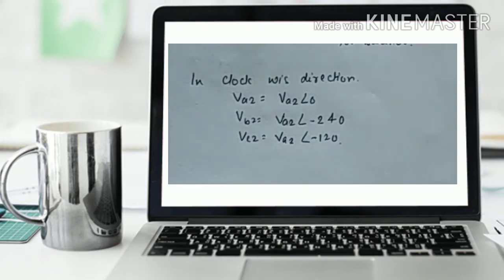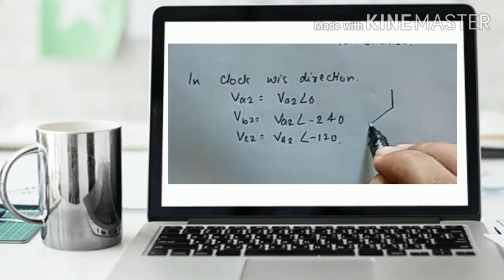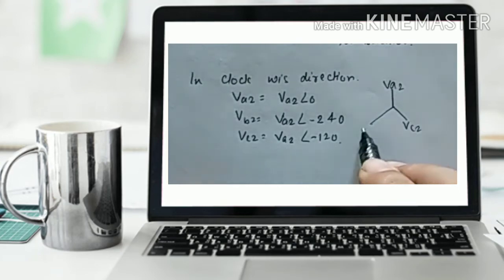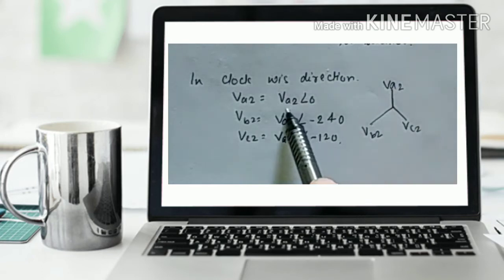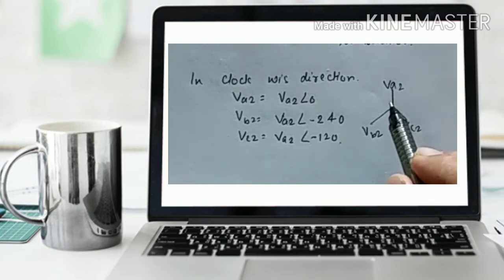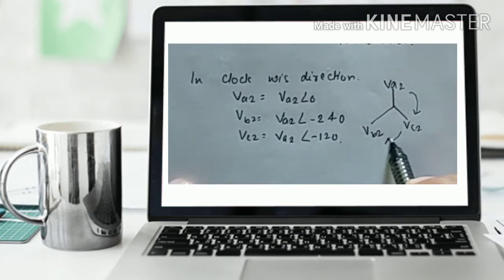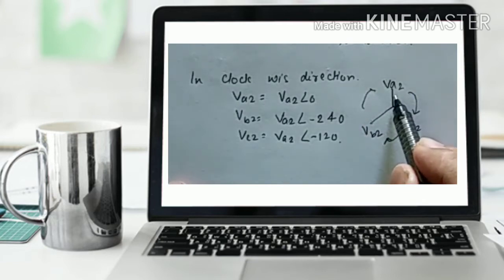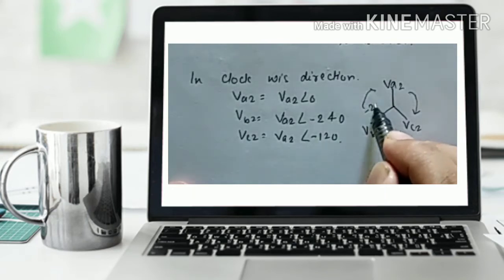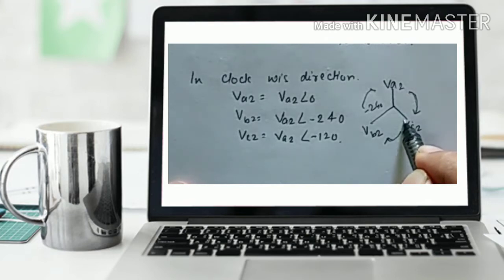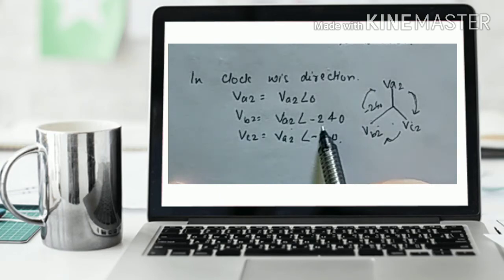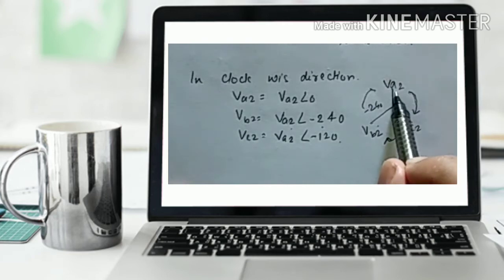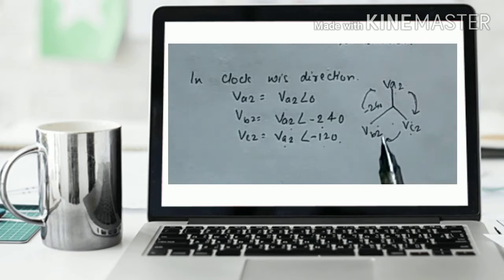As seen in the positive sequence component with clockwise and anticlockwise direction, the same applies for the negative sequence. For the clockwise direction, the phasors are Va2, Vc2 and Vb2. Taking Va2 as the reference at angle 0°, Va2 equals Va2 angle 0. Va2 to Vc2 is 120 degrees and Vc2 to Vb2 is 120 degrees, so Vb2 equals Va2 angle minus 240° and Vc2 equals Va2 angle minus 120°.